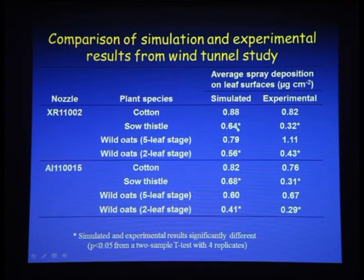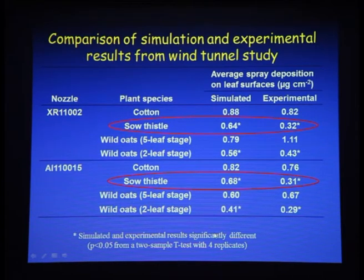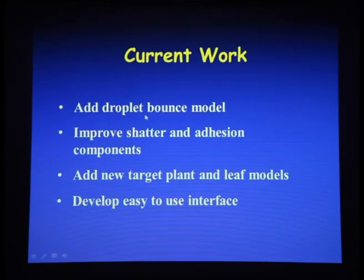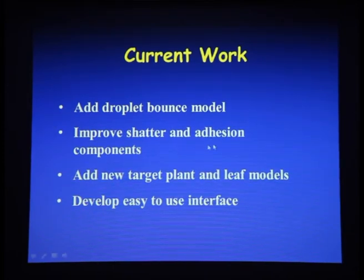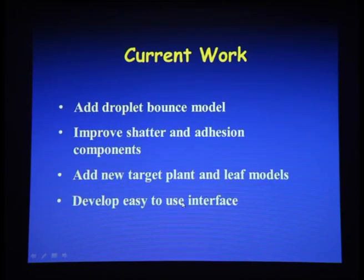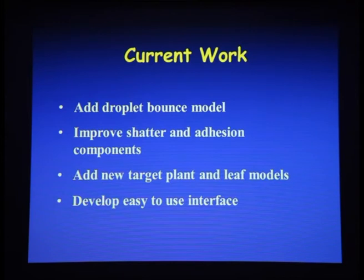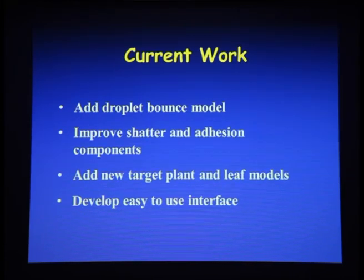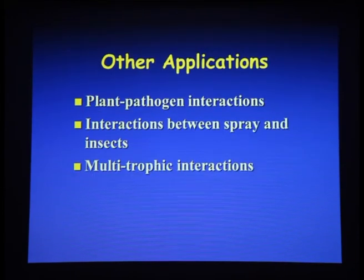The sow thistle result is interesting because it has a hard-to-wet surface, indicating we need to think beyond simple droplet physics. What we're currently working on is adding a droplet bounce model, improved shatter and adhesion components, new target plants and leaf models, and an easy-to-use interface. The chemical company partners want a tool that extension people can use in the field to say 'here's why you want to spray like this' — a model they can show farmers directly.